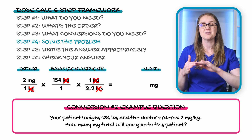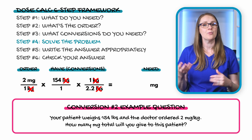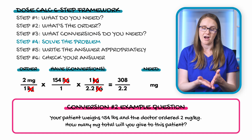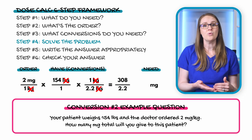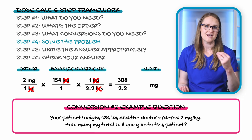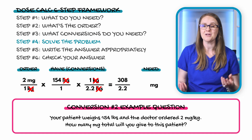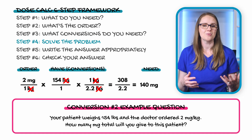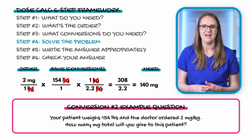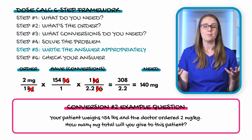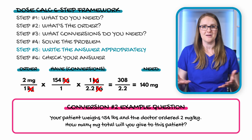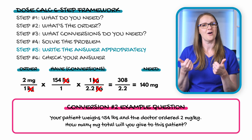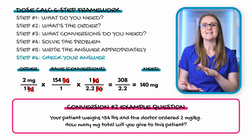Step four: multiply across the top, multiply across the bottom, and divide. 2 × 154 × 1 = 308; 1 × 1 × 2.2 = 2.2; 308 ÷ 2.2 = 140. Step five: write the answer appropriately — 140 milligrams. It's a whole number so no rounding needed.